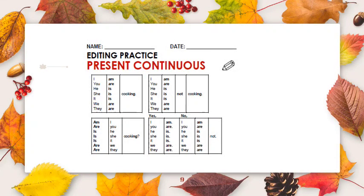Now let's look at question forms: Are you cooking? Yes, you are. No, you are not. Is he cooking? Yes, he is. No, he is not. Is she cooking? Yes, she is. No, she is not. Is it cooking? Yes, it is. No, it is not. Are we cooking? Yes, we are. No, we are not. Are they cooking? Yes, they are. No, they are not.